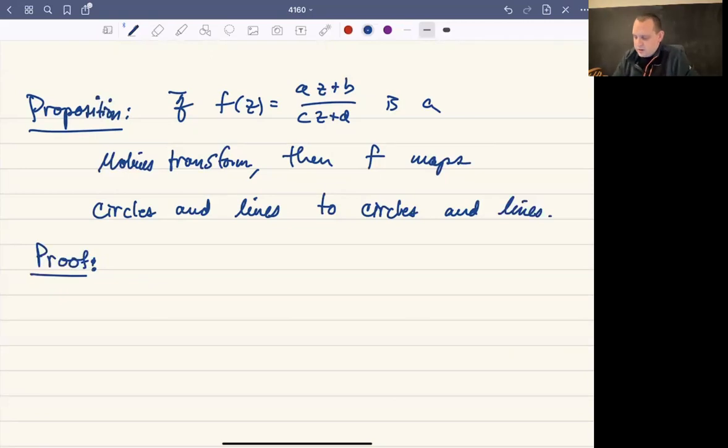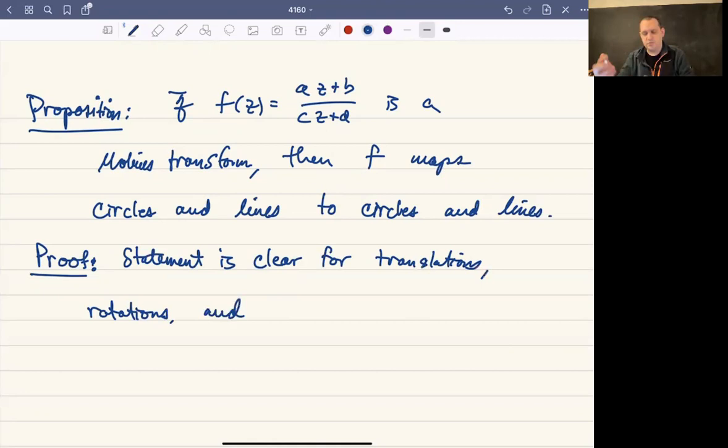So this statement is, I don't want to say obvious—obvious is a four-letter word in math—but the statement is clear for translations, rotations, and dilations. So we need only check inversions.